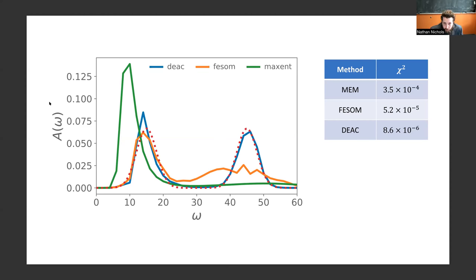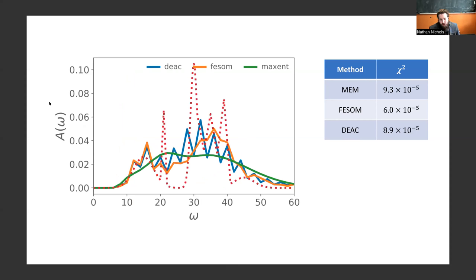What about a more complex spectrum? Here's a more complex spectrum. It's kind of difficult to see. It's really complicated, and you can see all three methods kind of fail about equally at this. They're all within the same order of magnitude of each other in terms of chi-squared.